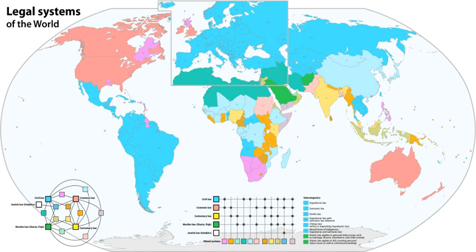The decisions of a court are binding only in a particular jurisdiction, and even within a given jurisdiction, some courts have more power than others. For example, in most jurisdictions, decisions by appellate courts are binding on lower courts in the same jurisdiction, and on future decisions of the same appellate court, but decisions of lower courts are only non-binding persuasive authority. Interactions between common law, constitutional law, statutory law, and regulatory law also give rise to considerable complexity.